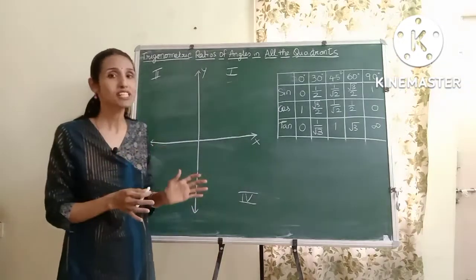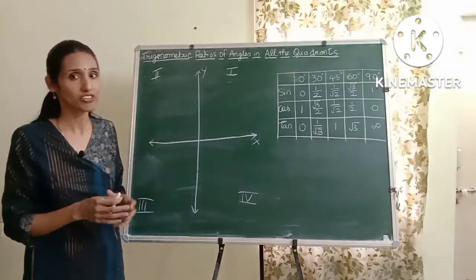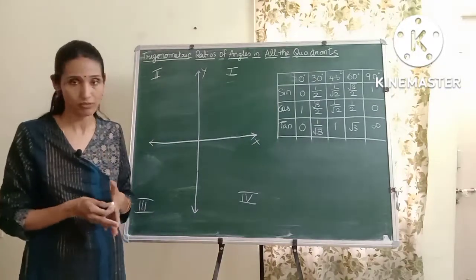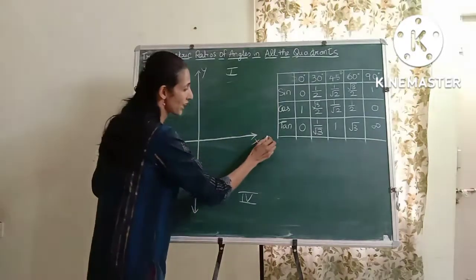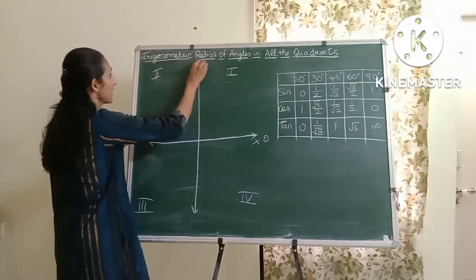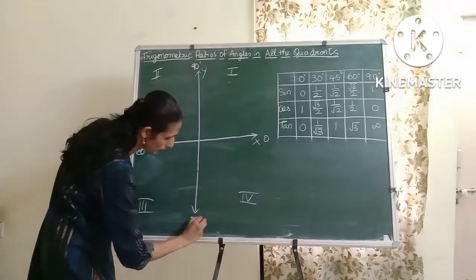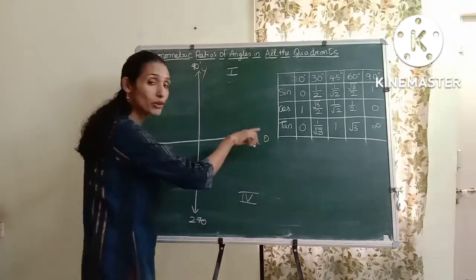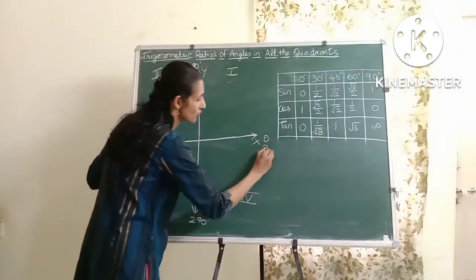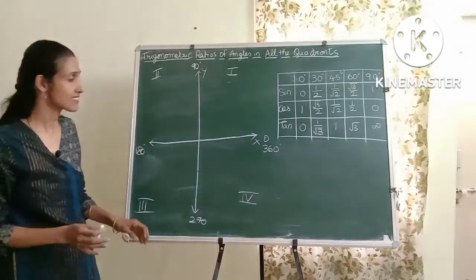Let's name the four quadrants. This is the first quadrant, this is the second quadrant, here is the third quadrant, and this is the fourth quadrant. You have to name them in the anticlockwise direction. This position will be 0 degrees, this will be 90, this will be 180, this will be 270, and when you come back you get a complete angle of 360 degrees.